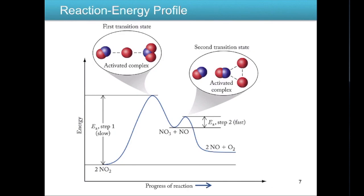A potential energy diagram for a multi-step mechanism shows more than one bump — each bump represents one elementary step with its own activation energy. Step one has the highest activation energy here, making it the slow step. The reaction reaches the first transition state or activated complex, falls down, then goes through a second smaller bump before reaching the products. The higher the activation energy, the slower that step.